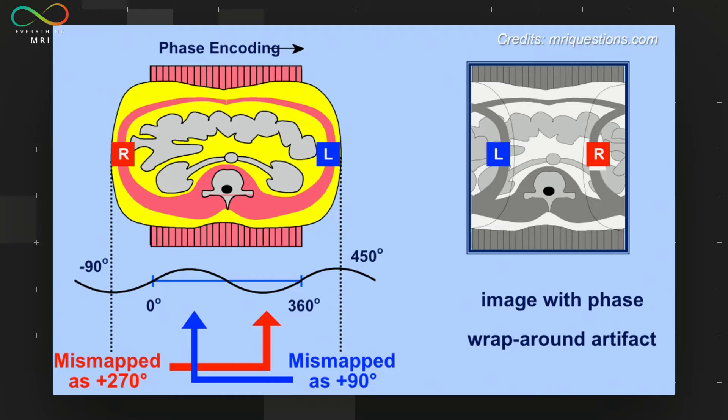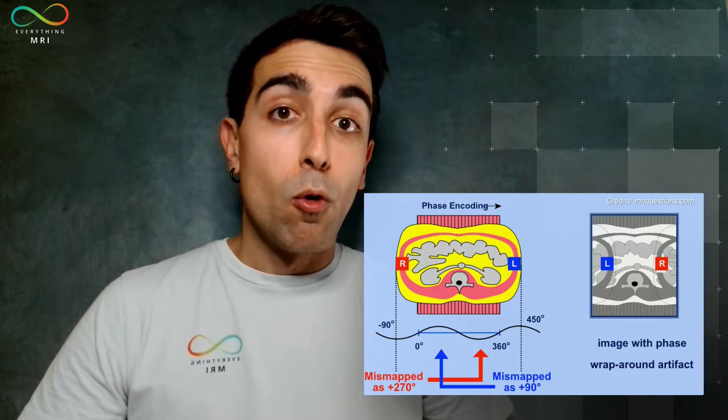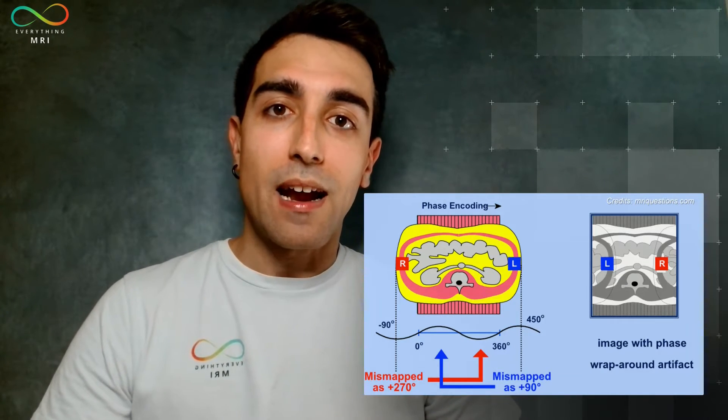So in the case of imaging the abdomen you will notice that the left side of the patient's body gets wrapped around and spatially misaligned to the opposite side of the image. Similarly the patient's right side gets wrapped around to the left. Very important, and we'll see later on why, this wrap around effect will be mainly occurring in the phase encoding direction.